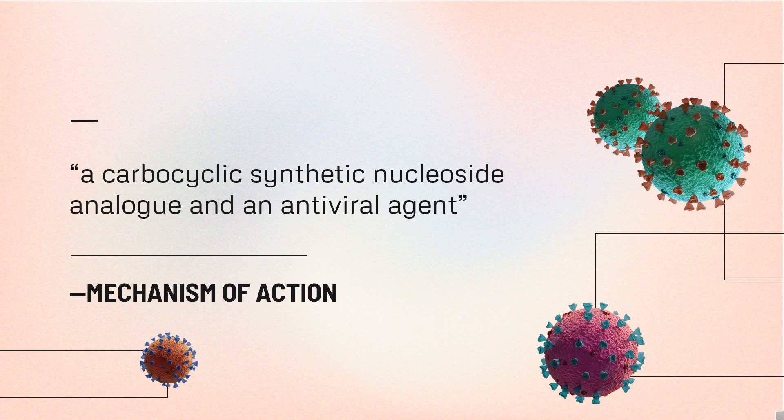Abacavir is a carbocyclic synthetic nucleoside analog and an antiviral agent. Intracellularly, Abacavir is converted by cellular enzymes to the active metabolite carbovir triphosphate, an analog of deoxyguanosine 5-triphosphate (dGTP). Carbovir triphosphate inhibits the activity of HIV-1 reverse transcriptase (RT), both by competing with the natural substrate dGTP and by its incorporation into viral DNA. Viral DNA growth is terminated because the incorporated nucleotide lacks a 3'-OH group, which is needed to form the 5'-3' phosphodiester linkage essential for DNA chain elongation.